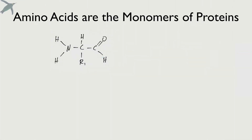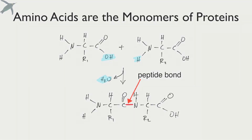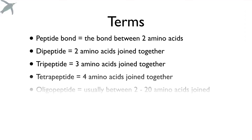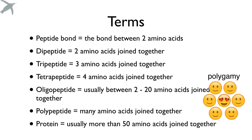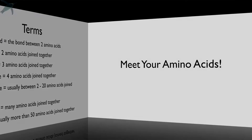We're going to take two amino acids — two monomers — and join them together in dehydration synthesis, and the bond we make is called a peptide bond. You're going to see a lot of terms with 'peptide' in it: di, tri, tetra, oligo means some, poly still means many. When we use the word protein, we're usually talking about more than 50 amino acids joined together.